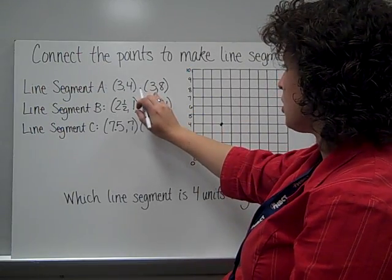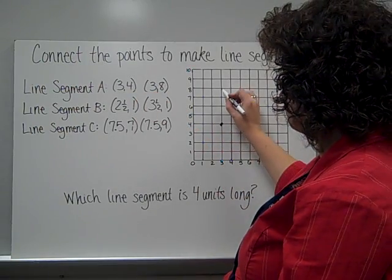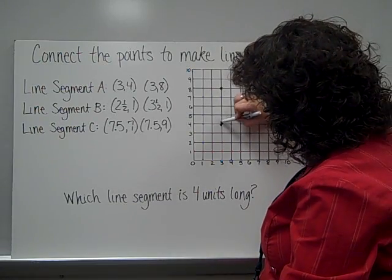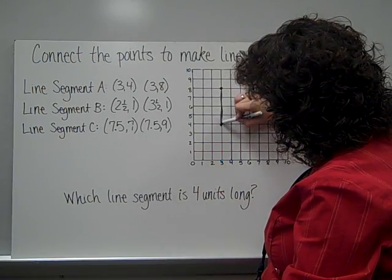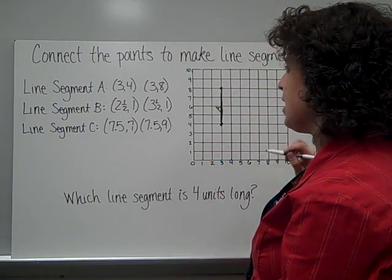And it's going to go to 3, 8. So 3, 8. All right. So now I'm going to connect those points. Try to make it thicker so that you can see that this would be line segment A.